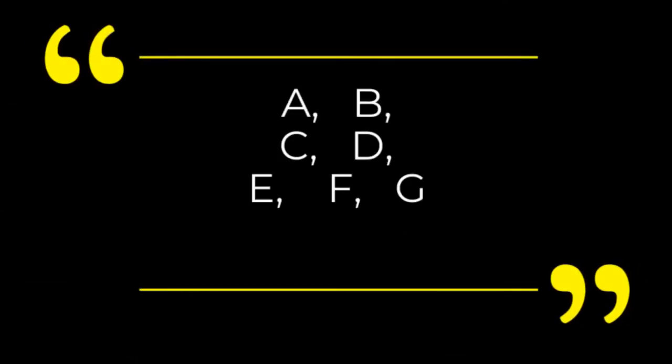Music notes are named after the first seven letters of the alphabet from A to G. By their position on the staff, they represent the entire range of musical sound.